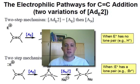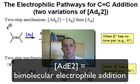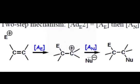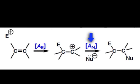There are two ways that electrophilic addition to an alkene occurs, both of which follow the AD sub E2 pathway. In this webcast, we will cover the first variation of the AD sub E2, which involves an AE step followed by an A sub N step.